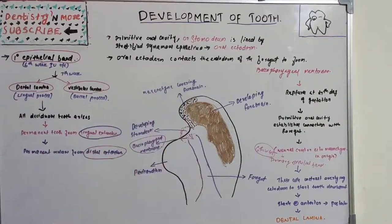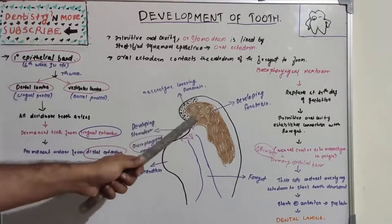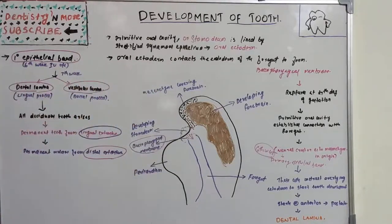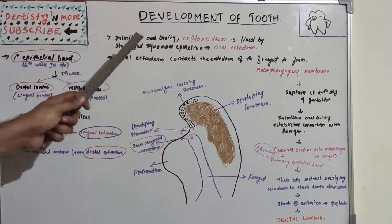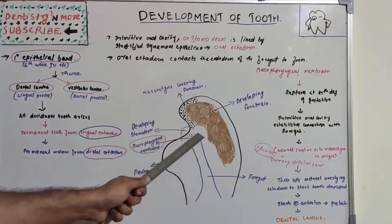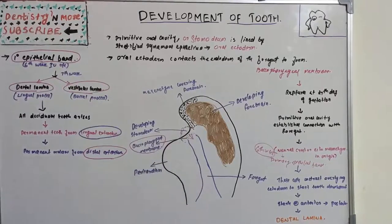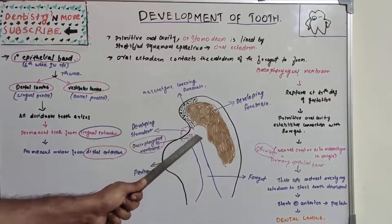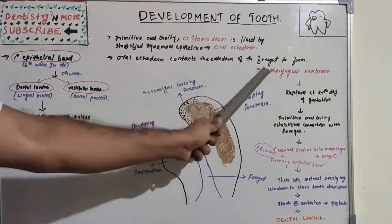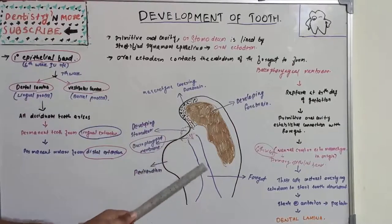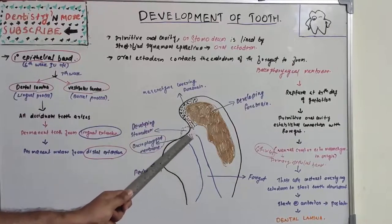In the first or second to third week of gestation, we have a primitive oral cavity known as the stomodium, which is lined by stratified squamous epithelium called the oral ectoderm. What happens after that is this oral ectoderm contacts the endoderm of the foregut, creating the buccopharyngeal membrane — formed by the endoderm of the foregut and the primitive oral cavity.